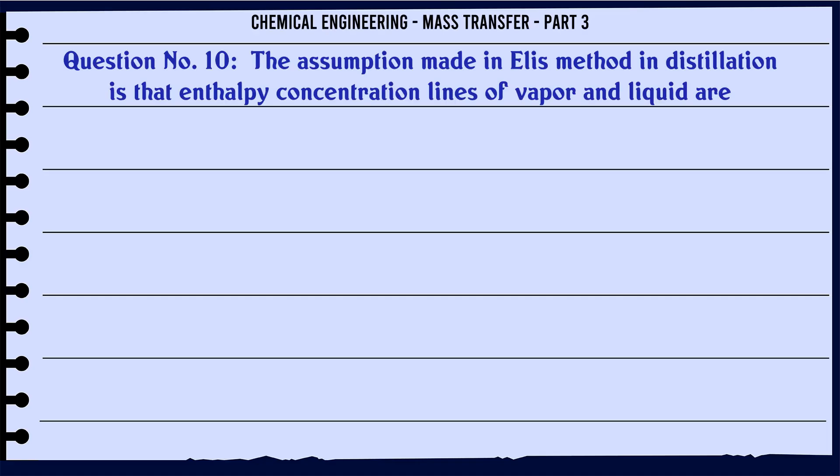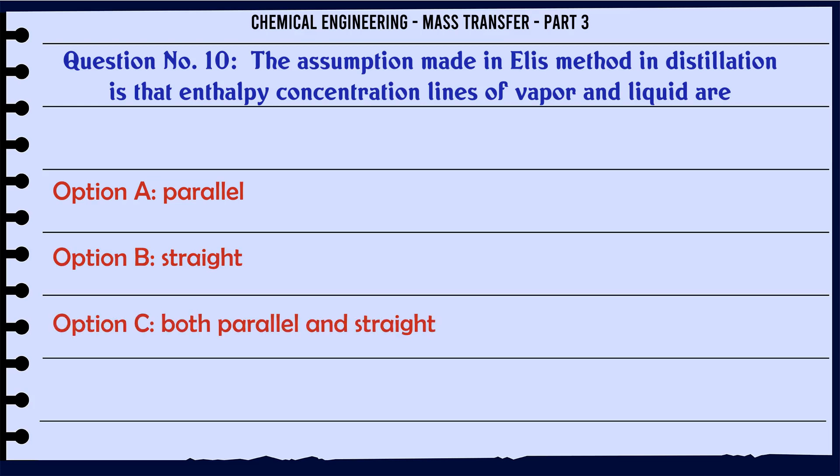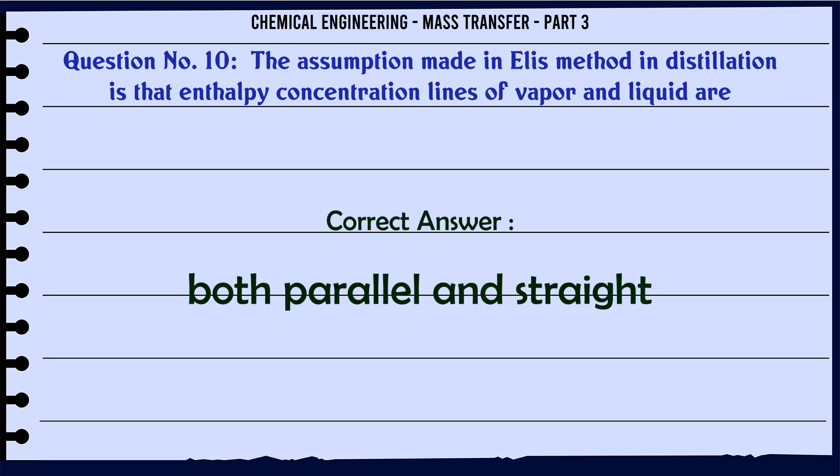The assumption made in Ale's method in distillation is that enthalpy-concentration lines of vapor and liquid are: A) parallel, B) straight, C) both parallel and straight, D) neither parallel nor straight. The correct answer is: both parallel and straight.